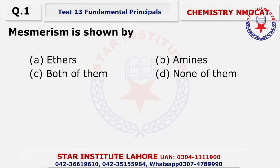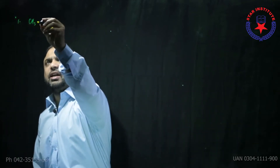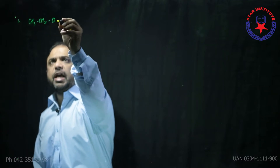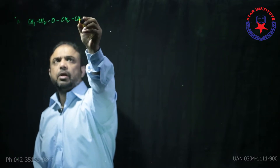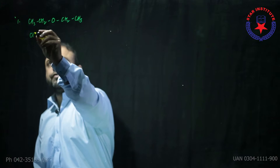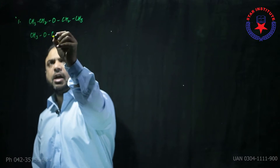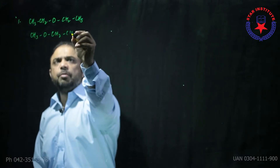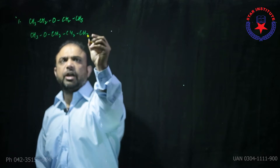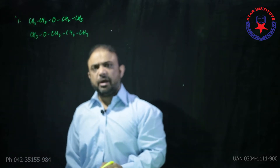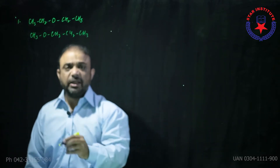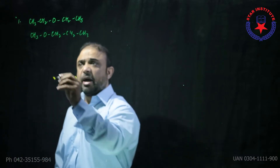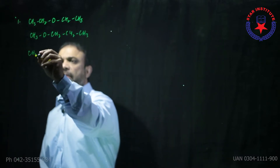Question number one: Metamerism is shown by — answer is C, both ethers and amines. How? For question number one, if we consider ethers, this is a molecule of ether. If we look at its metameric forms, diethyl ether and methyl propyl ether can show you metamerism. And the second example given is of amines — these are secondary amines which can show you metamerism.